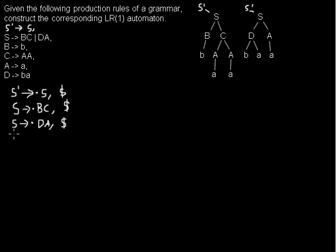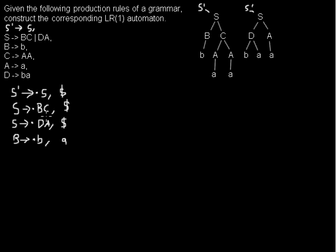We can do more predictions — we predict for B. We have one rule: B → •b (a terminal b that we haven't seen yet). In the lookahead here we don't have the dollar sign, because to the right of this B in the rule S → BC, there is a C. We need to find FIRST(C): C expands to AA, and A expands to terminal a, so the first terminal symbol after B is a terminal 'a'. That's why we write 'a' in the lookahead.